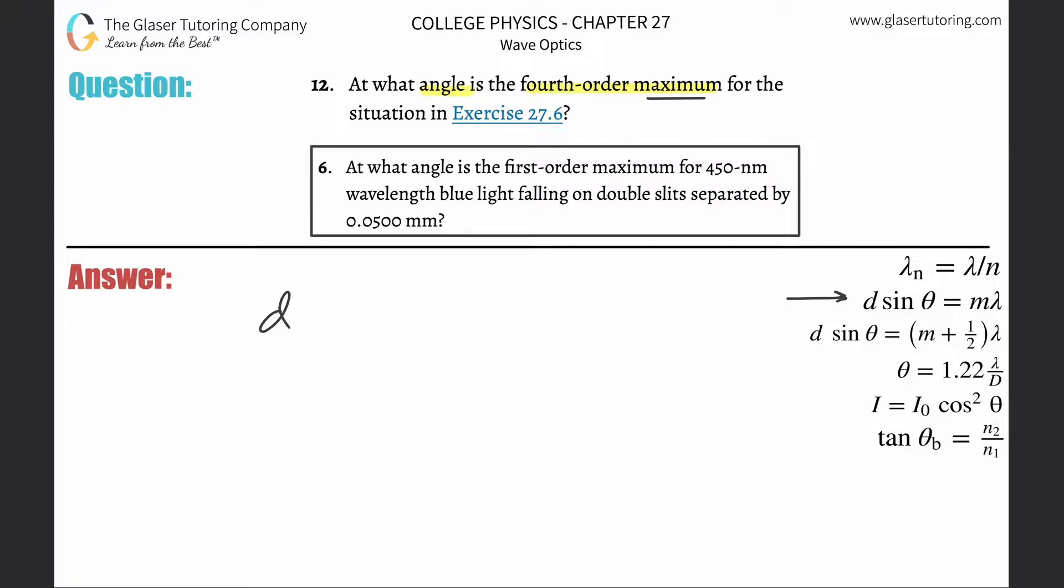The distance between the double slits times the sine of the angle to that fourth order maximum will equal the m value, which is the order in this case—careful if it's destructive—multiplied by the wavelength.